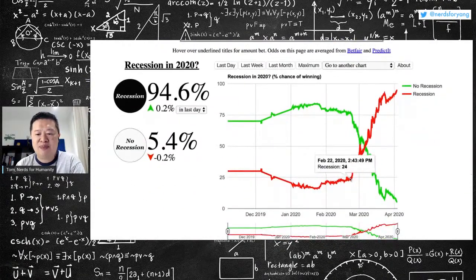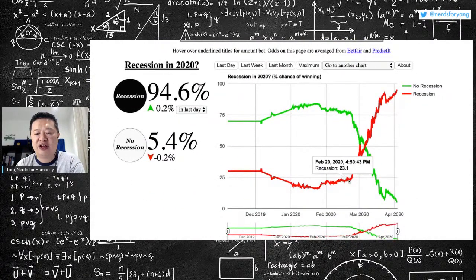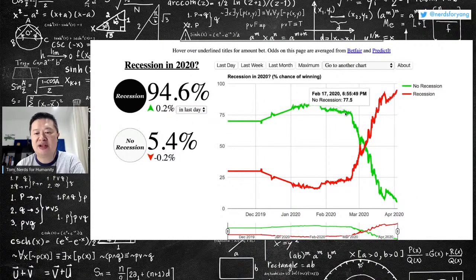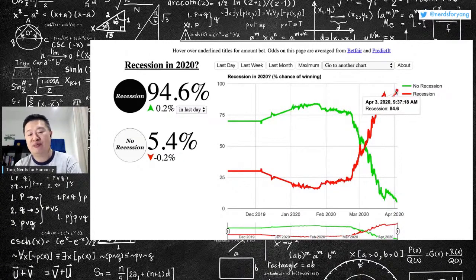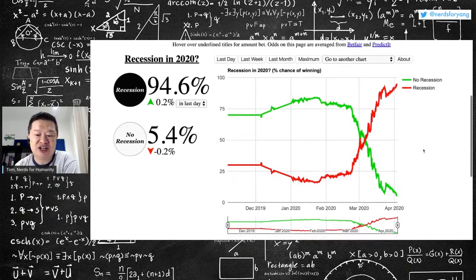And recession, I'm pretty much sure the gamblers are thinking that we're going to have a recession. Way back when, in end of Feb, most people did not think we were going to have a recession.